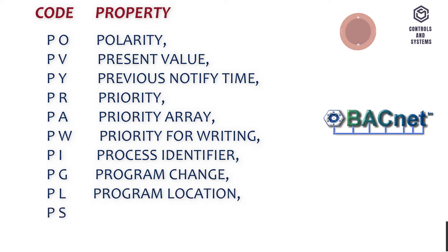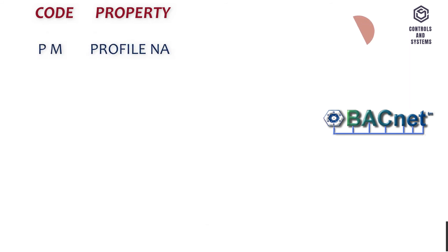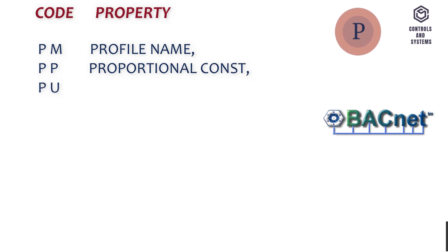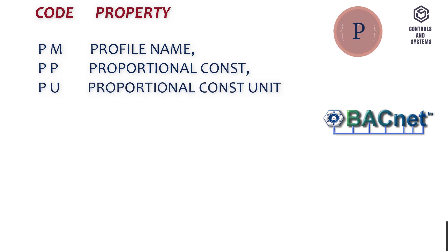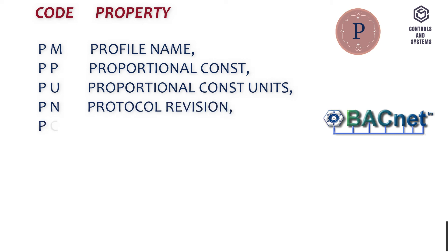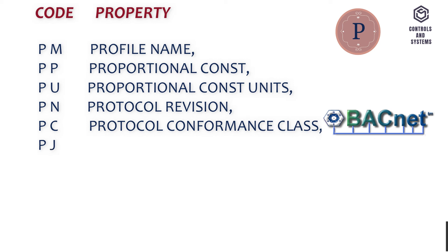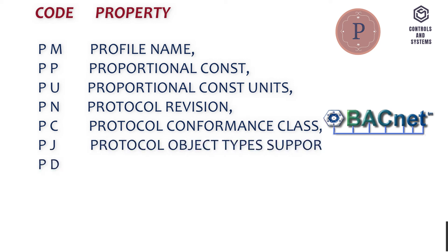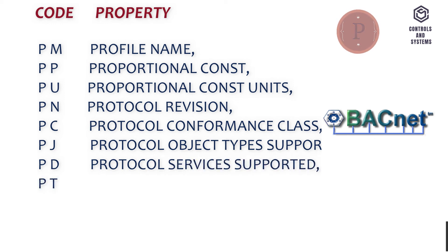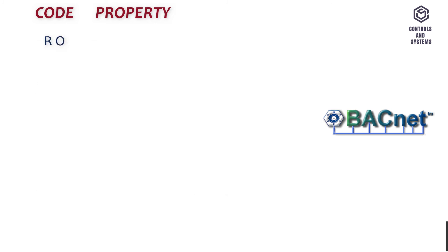C-P-S - Program Location, C-P-M - Program State, C-P - Profile Name, C-P-U - Proportional Constant, P-N - Proportional Constant Units, C-P-C - Protocol Revision, C-P-J - Protocol Conformance Class, C-P-D - Protocol Object Types Supported, C-P-T - Protocol Services Supported, C-R-O - Protocol Version, C-R-H - Read Only.